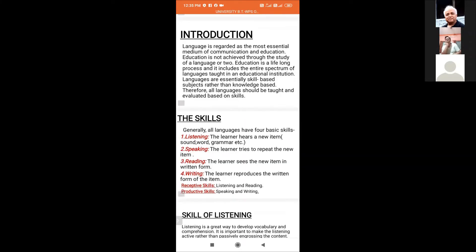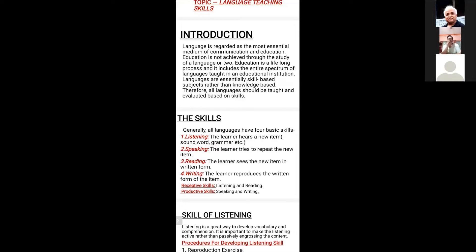Generally, all languages have four basic skills: listening, speaking, reading, and writing. First, the learner hears a new item like a sound, word, grammar features, etc. Then he tries to repeat the new item. Next, he sees the new item in written form, and finally, the learner reproduces the written form of the item. Listening and reading are known as receptive skills because we receive language components through these skills, while speaking and writing are known as productive skills because we produce language meaningfully through these.